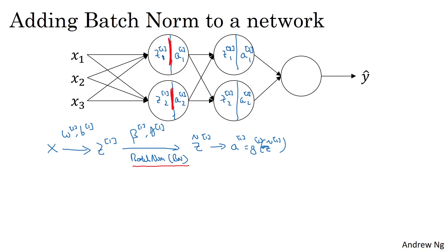Next, you take this value a1 and use it to compute z2. This is now governed by w2, b2. Similar to what you did for the first layer, you would take z2 and apply it through batch norm.